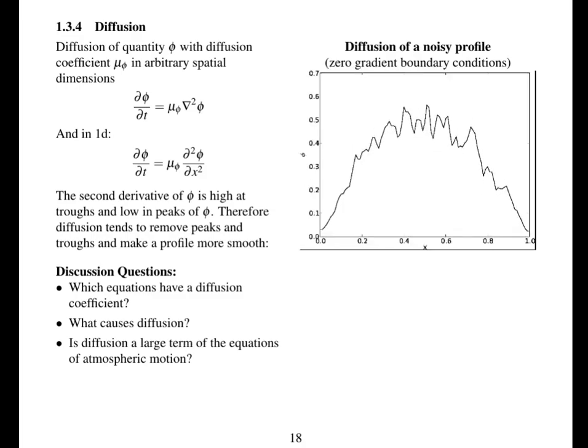Now again to look at the influence of the diffusion equation. Two of the Navier-Stokes equations had diffusion terms in them, which is this term of the Laplacian. So the rate of change of a variable equals diffusion coefficient multiplied by the Laplacian of that variable. And in 1D rather than Laplacian you've just got the second derivative of that variable. Where the second derivative is high at troughs in the variable and low at peaks. Therefore the diffusion will remove peaks and raise troughs to make a profile more smooth. So if you start with this noisy profile it will remove the peaks and the troughs. And it will act fastest on the sharpest peaks and the sharpest troughs.